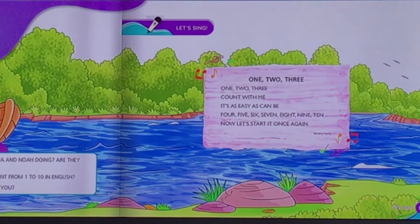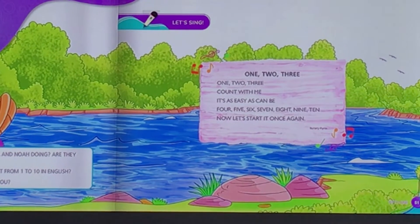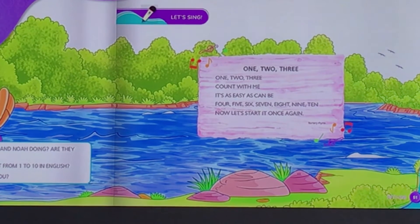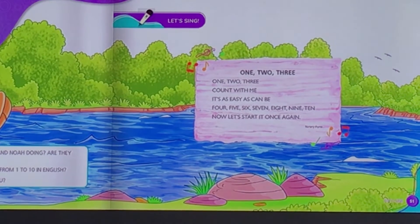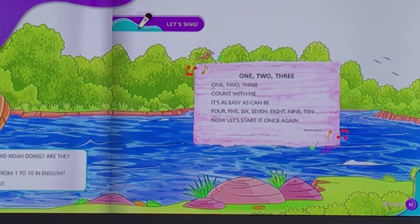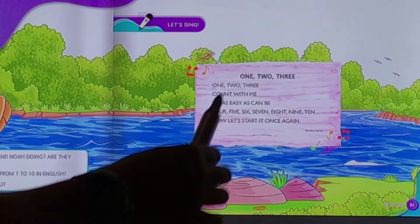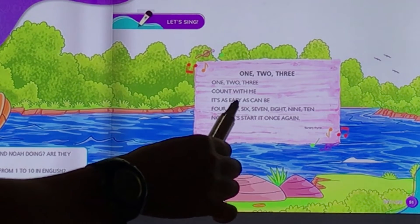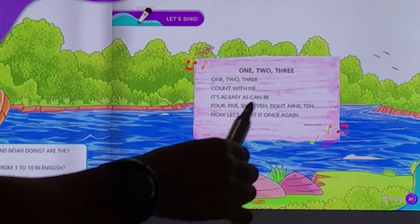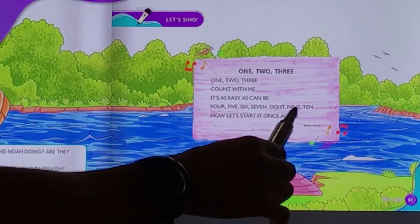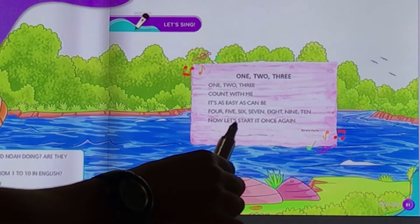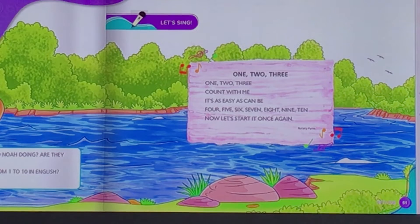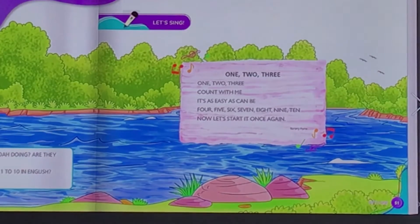1, 2, 3, count with me. It's as easy as can be. 4, 5, 6, 7, 8, 9, 10. Now let's start it once again. 1, 2, 3, count with me. It's as easy as can be. 4, 5, 6, 7, 8, 9, 10. Now let's start it once again. Aí vocês vão repetir várias vezes a musiquinha até aprender a contar até 10.